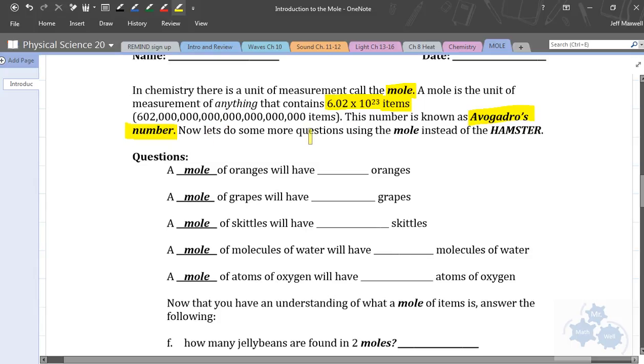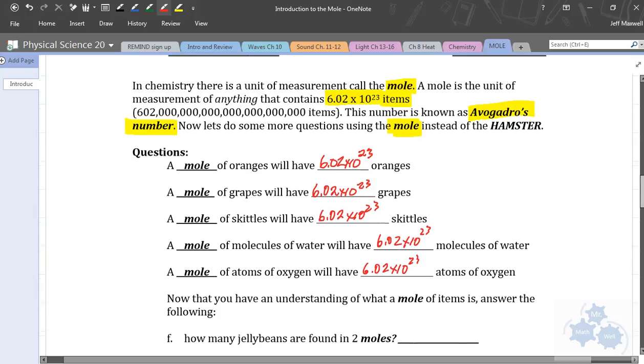It's called Avogadro's number and I will explain why in another lesson. So, let's do some calculations, some questions involving a mole instead of a hamster. A mole of oranges is going to have how many oranges in it? Yes, one mole is 6.02 times 10 to the 23 oranges. A mole of grapes, 6.02 times 10 to the 23. A mole of Skittles, 6.02 times 10 to the 23rd. A mole of molecules of water, 6.02 times 10 to the 23rd. A mole of atoms of oxygen, 6.02 times 10 to the 23rd.